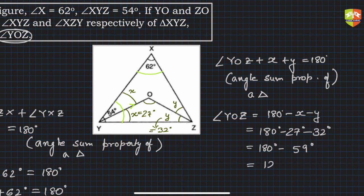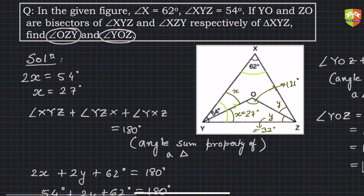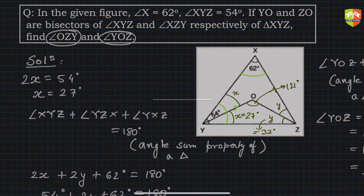So 180 degrees minus 59 degrees, and hence this is 121 degrees. We found out this angle to be equal to 121 degrees. This is what the problem was asking us to find out. Basically we applied only angle sum property of the triangle to solve this problem.